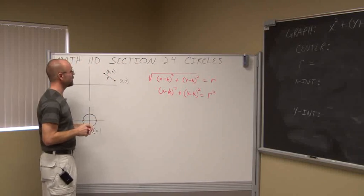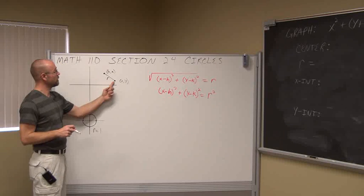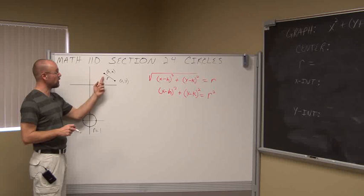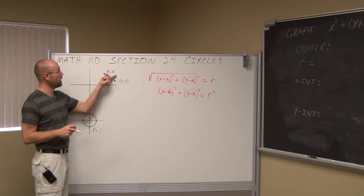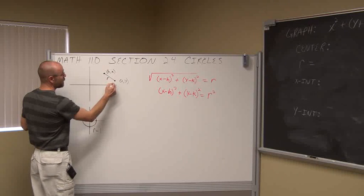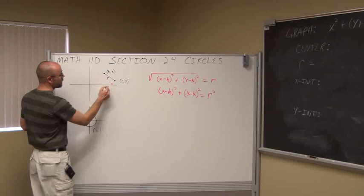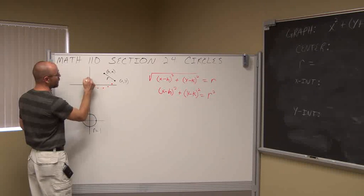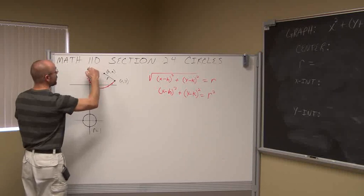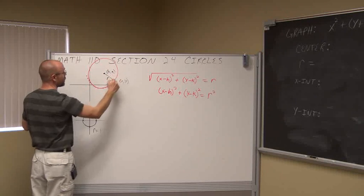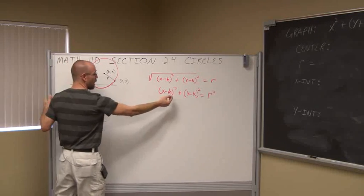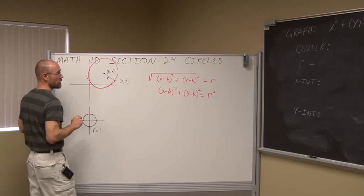A circle is defined as all the points in a plane that are r units away from the center. So h, k actually describes the center of a circle. If I go r units away in any direction — here, or here, or all the way around — we're actually making a circle from this radius. Hopefully my freehand circle doesn't look too bad, but what this describes is a circle.